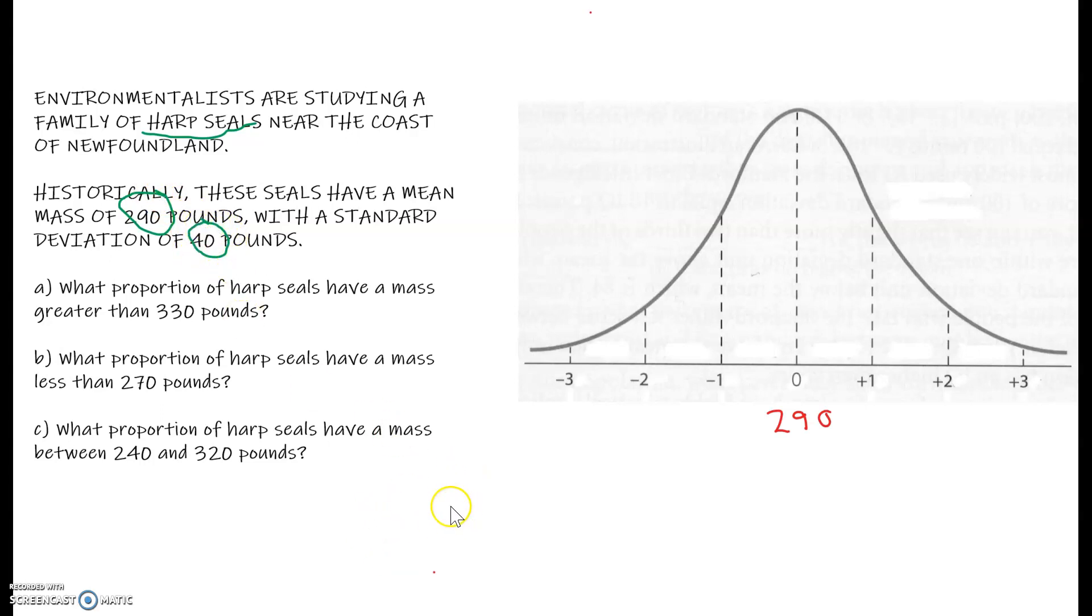Question A says, what proportion of harp seals have a mass greater than 330 pounds? Well, I have marked off my picture here. 290 is the mean, and if I go over one standard deviation, I do get to 330.